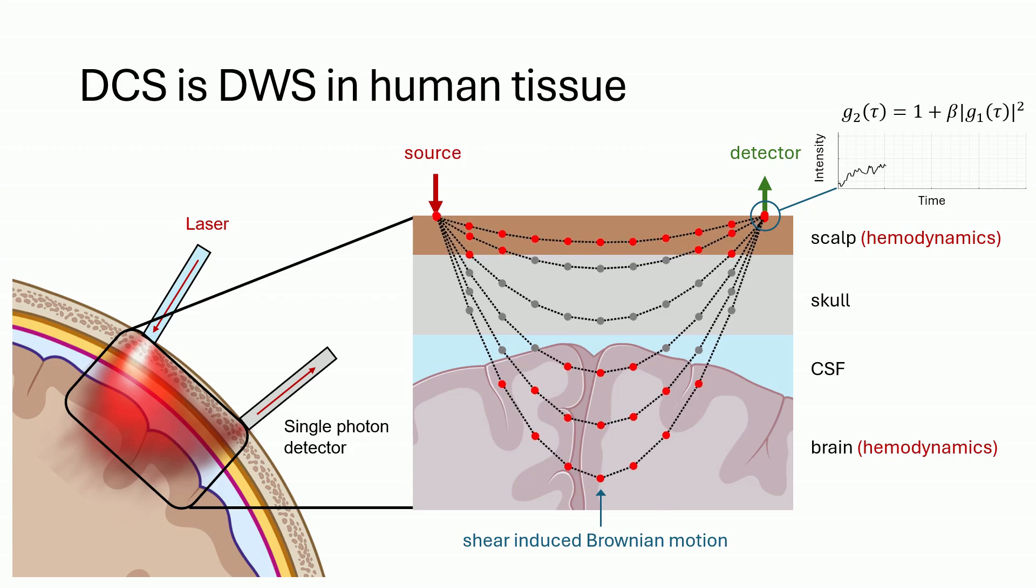And the intensity fluctuations that we detect are representative of the speed of the movement of these red blood cells. Again, taking the autocorrelation of this signal allows us to recover essentially the red blood cell mean squared displacement.